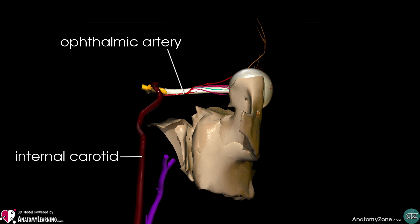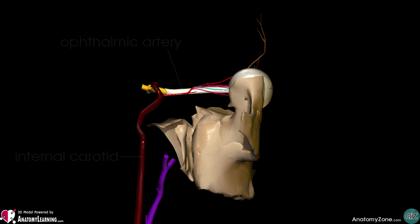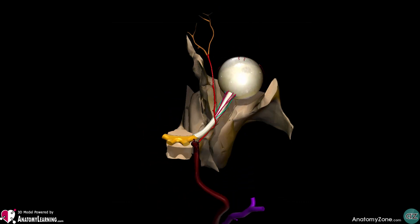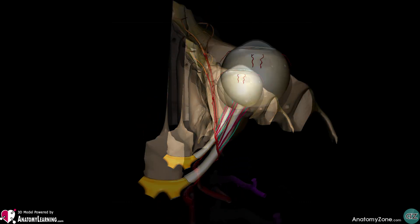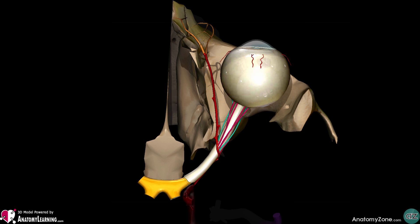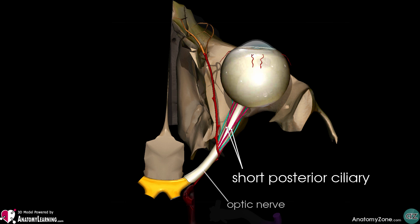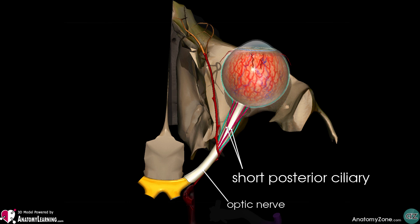From this view, you can see the ophthalmic artery arising from the internal carotid. You can see the short posterior ciliary arteries highlighted in pink, which pass around the optic nerve and pierce the sclera posteriorly to enter the choroid layer. The sclera has been made transparent for better visualisation.